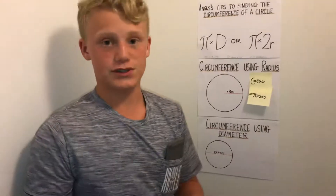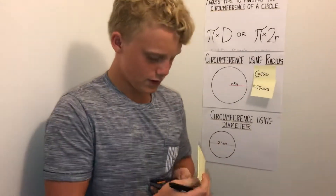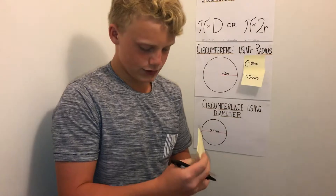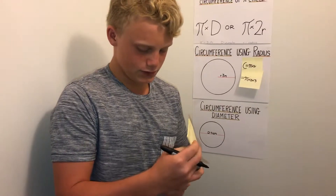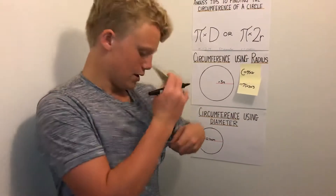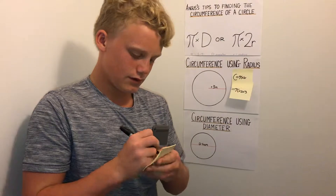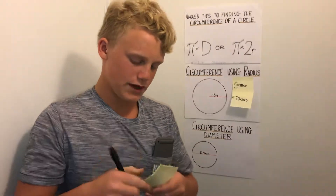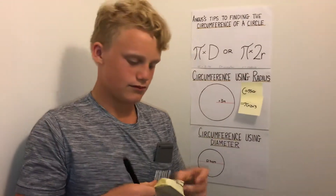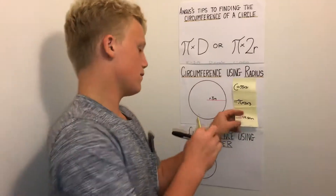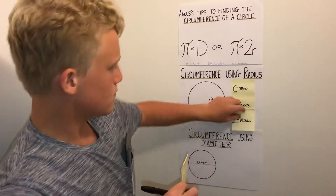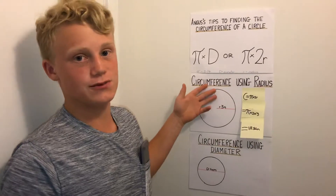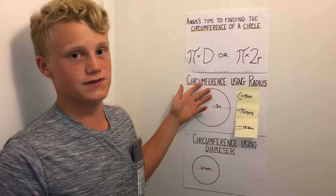Now all we have to do is work out that answer. So pi times 2 times 3 equals 18.84 meters. So there you have it — simple as that — how to use radius to work out the circumference of a circle.